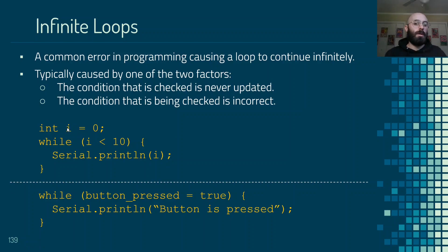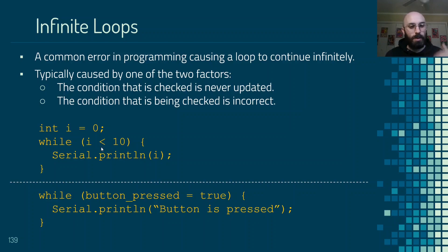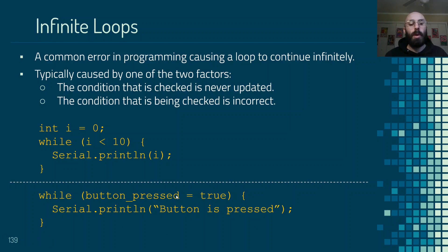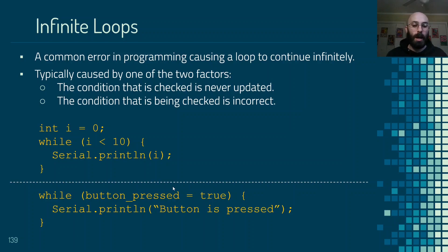For example, declaring an integer variable i and saying while i is less than 10, print the value of i — but if i is never updated inside the loop, i will never stop being less than 10, so this would run forever. Another infinite loop example: while buttonPressed equals true, but using a single equals sign instead of double equals. The single equals sign is the assignment operator, which forces buttonPressed to be true, so this condition is always true and the loop runs forever.